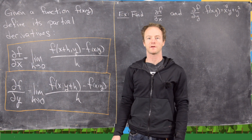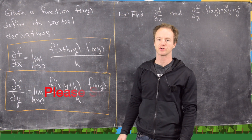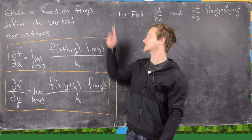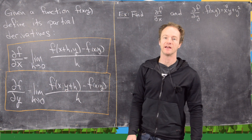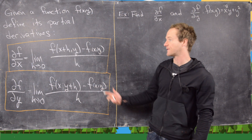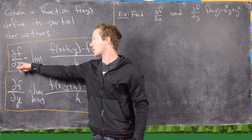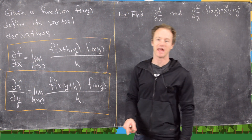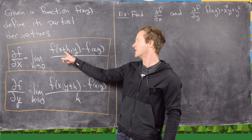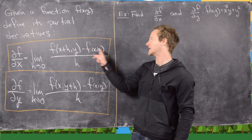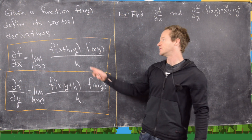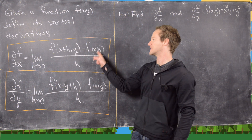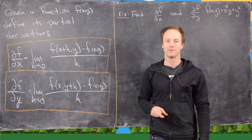In this video we're going to look at the notion of a partial derivative. So let's say we've got a function of two variables, x and y. We can define two partial derivatives as follows. The partial of f with respect to x is the limit as h goes to 0 of f(x+h, y) minus f(x, y) over h. Notice we're taking our limit in the x component while leaving the y component fixed.